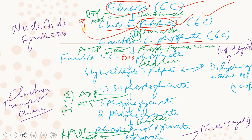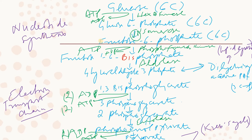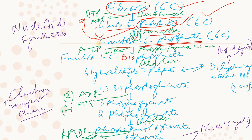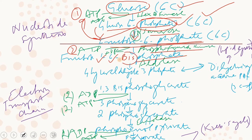Then rearrangement of this molecule happens — glucose is rearranged to form fructose-6-phosphate. The enzyme involved is isomerase, because this molecule is expressed in a different isomeric form. This fructose-6-phosphate is then carried forward. A second ATP is used here by phosphofructokinase, adding another phosphate group at position one, so the molecule already has a phosphate at position six. This forms fructose-1,6-bisphosphate.